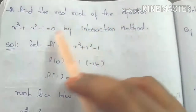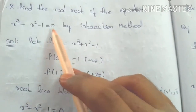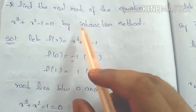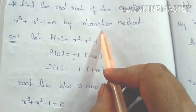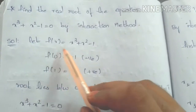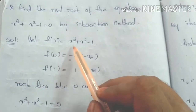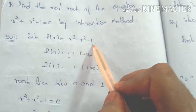Find the real root of the equation x cubed plus x squared minus 1 equals 0 by using the iteration method. First, let f of x equals x cubed plus x squared minus 1.